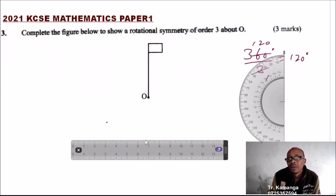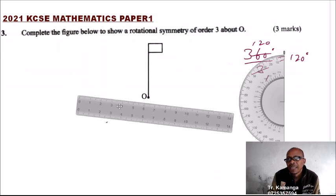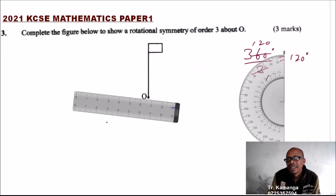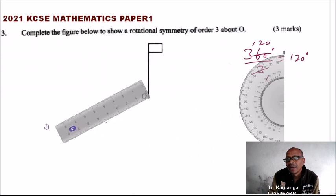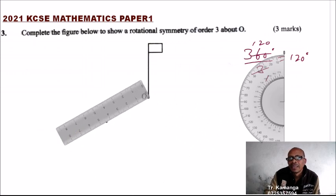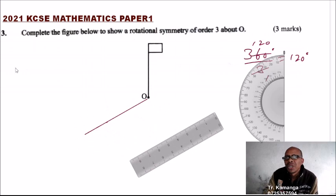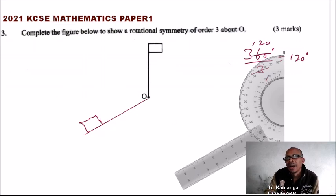For example, if we take this as our line here, you can draw that line. After that, measure this distance, and once you rotate, the square or rectangle will be there.